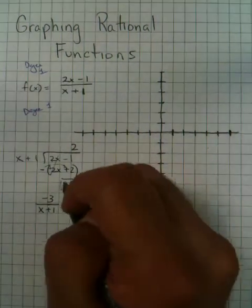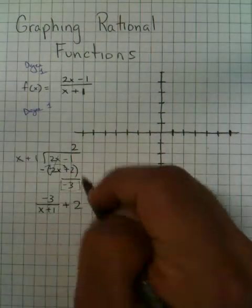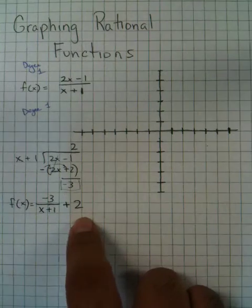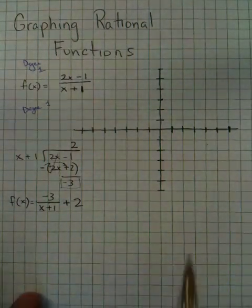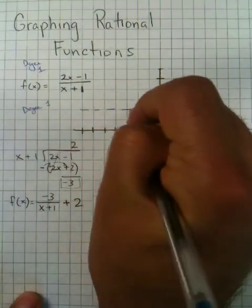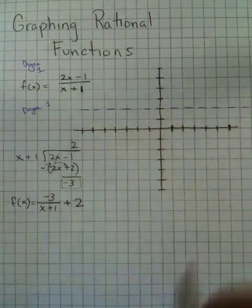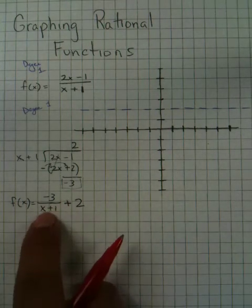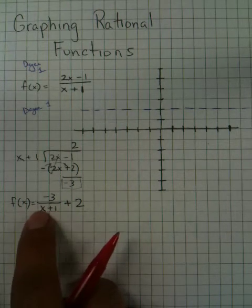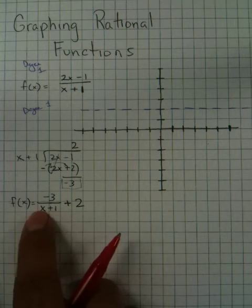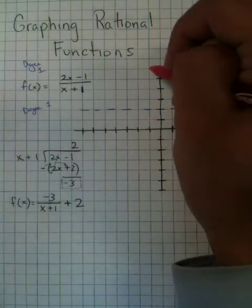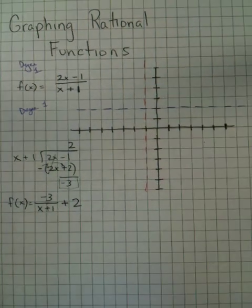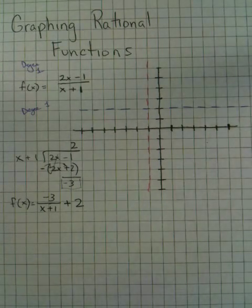This positive 2 that you divided by, that's where you get your horizontal asymptote. So at positive 2 you now have a horizontal asymptote. Your vertical asymptote's the same as it always has been. You'd say what is my restriction? What value makes this quantity zero? Negative 1. Negative 1 plus 1 is 0, so at negative 1 you have this vertical asymptote. Now this will give you a guiding picture of what your graph is supposed to look like.